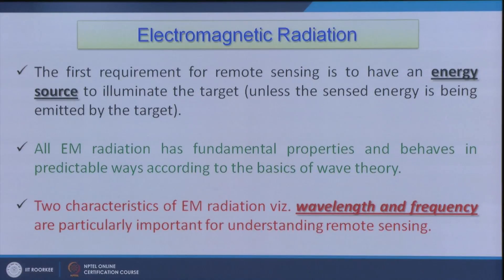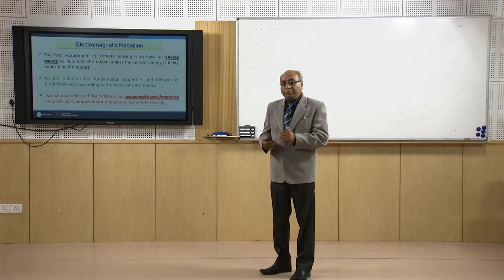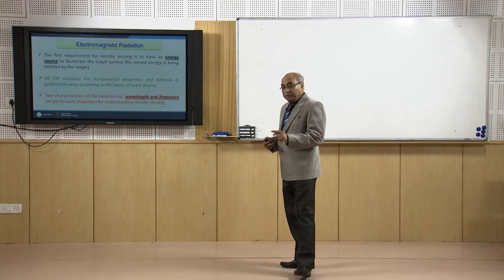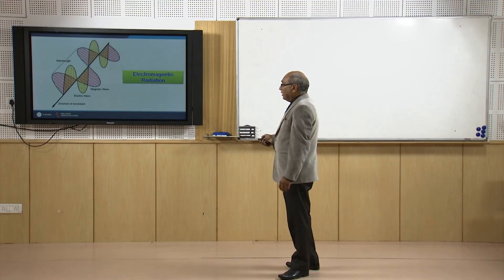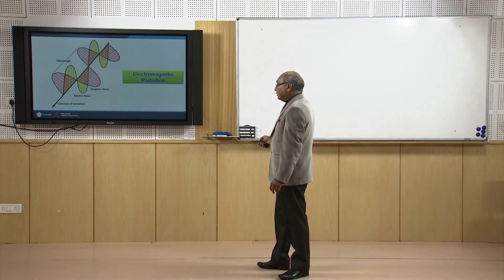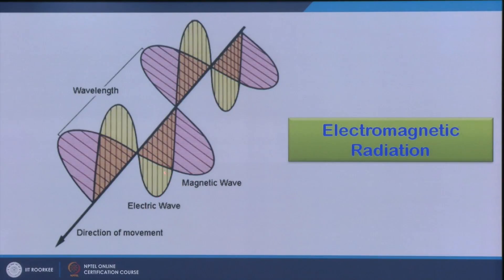There are two characteristics of EM radiation — wavelength and frequency — particularly important for understanding remote sensing. Sometimes people use one term or another, but they are not interchangeable. Electromagnetic radiation has magnetic waves and electric waves which are perpendicular to each other. In the direction of movement of the wave, the magnetic waves are shown in pink and the electric waves perpendicular to them are shown in yellow.